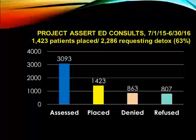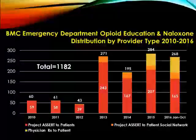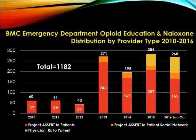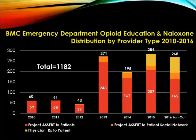Just to give you an idea of some data related to consultations: over 3,000 patients were assessed for referral to a detox program. Of those, half were placed that day and transportation was provided. About a quarter were denied because of no beds available or insurance problems, and a quarter refused. Among those refusals, we applied harm reduction strategies, and in 2010 we began naloxone distribution and opiate education in the emergency department. The red bars are the contribution by Project ASSERT peers, and the other bars are by the evening pharmacist and residents and faculty within the emergency department. We've seen an increase in all aspects of the program over the years. We've also integrated overdose education and naloxone distribution into the Faster Paths program so that everyone seen in the medication assessment unit is given co-prescribed naloxone.